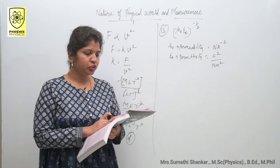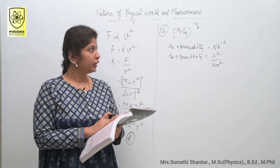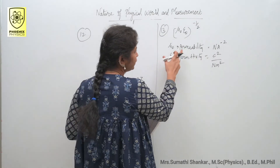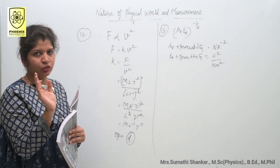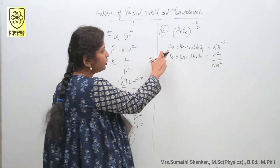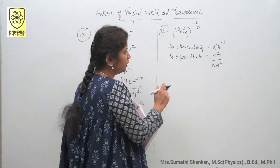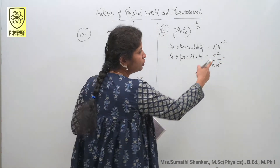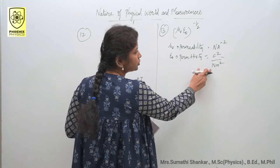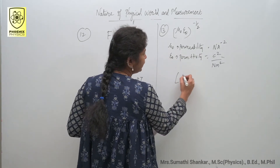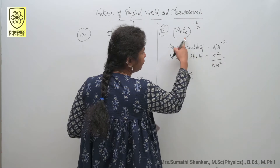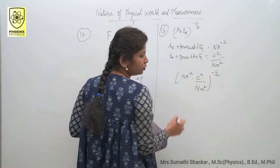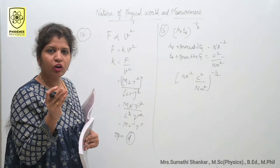Question number 13: the dimension of (μ₀ε₀)^(−1/2). Here μ₀ is permeability with unit N A⁻², and ε₀ is permittivity with unit C² per N m². Substituting: μ₀ε₀ gives N A⁻² times C² divided by N m². Newton cancels. Using Q equals IT, so C equals A·s, replace C² with A²s².